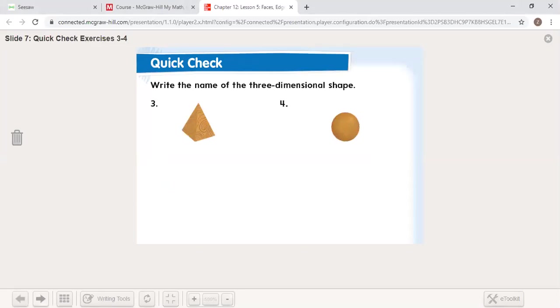All right, name those two 3D shapes. Hopefully you got number three was a pyramid and four was a sphere.